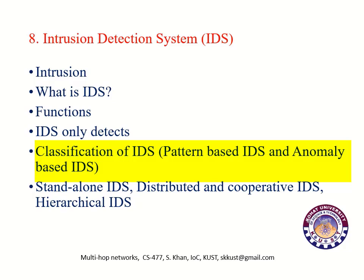There are two important types of intrusion detection systems. Number one, pattern-based intrusion detection systems. Number two, anomaly-based intrusion detection systems. Pattern-based IDS has the capability to identify all known intrusions or attacks, while anomaly-based IDS has the intelligence to identify and respond to new intrusions which are not known. IDS are further classified as standalone intrusion detection systems, distributed and collaborative intrusion detection systems, and hierarchical intrusion detection systems.